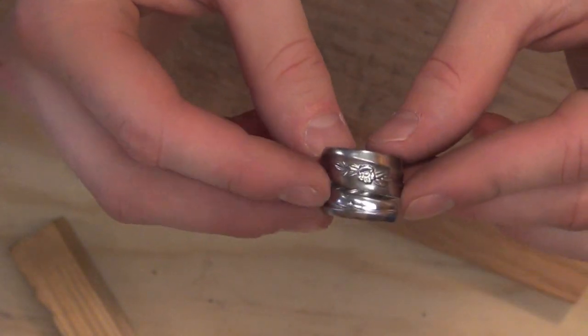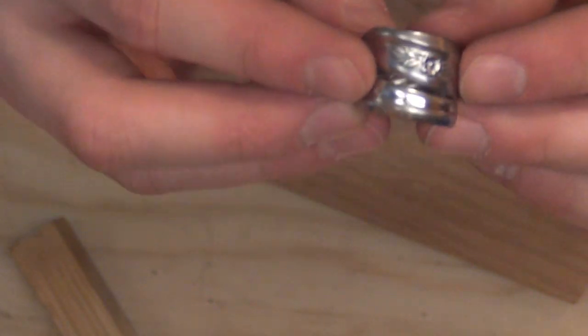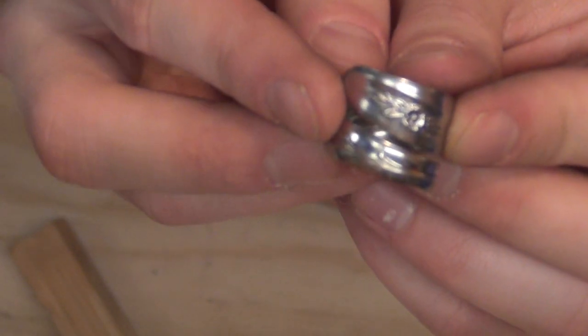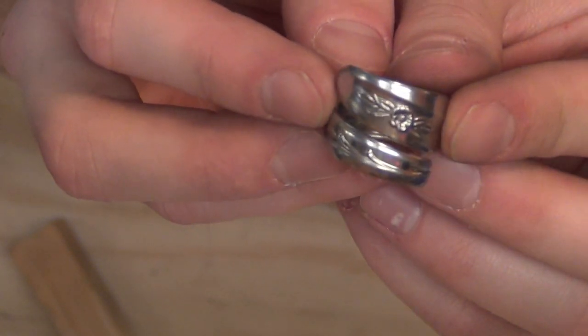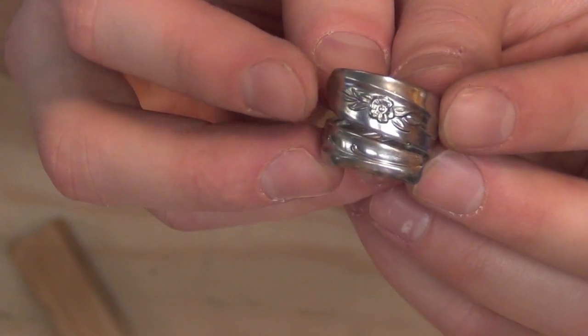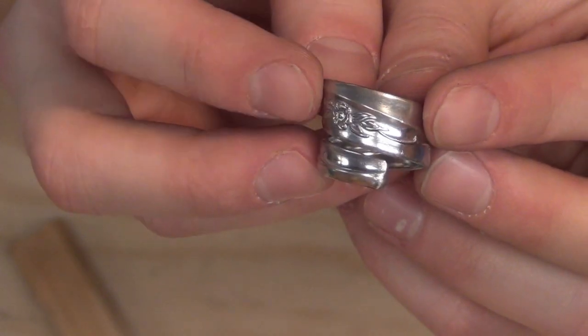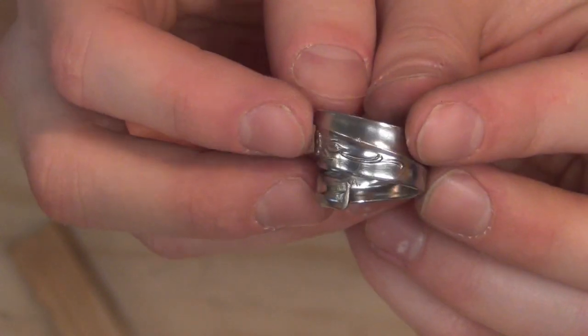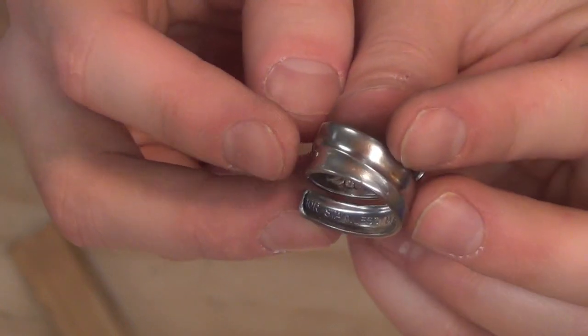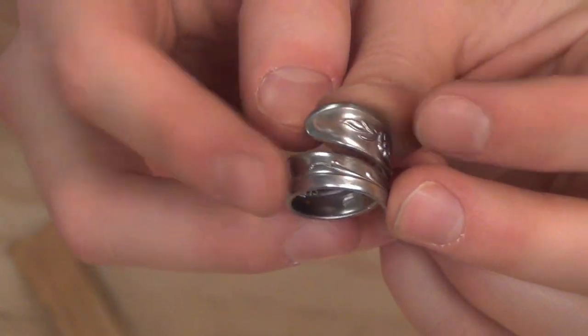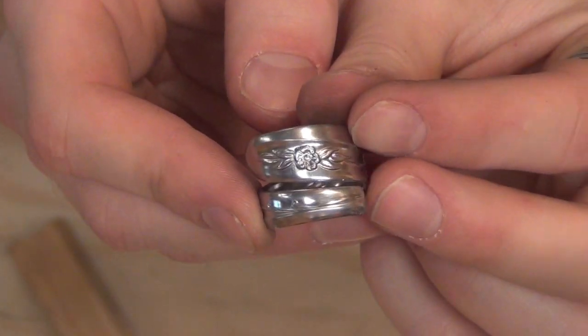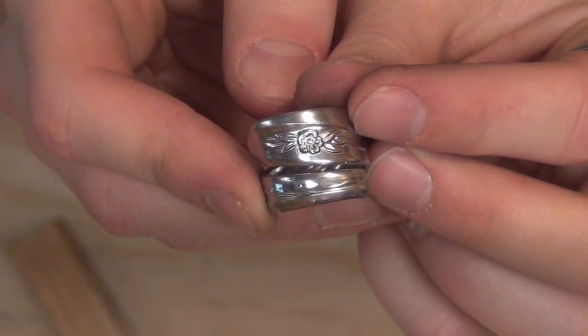But here is the semi-finished project for a spiral spoon ring. I think it turned out nicely. Thanks for watching. This is Beachhead. Out.